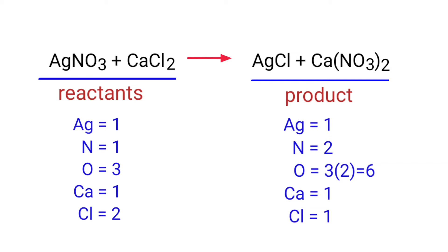In this equation we need to balance the nitrogen atoms first. To do this we need to put a coefficient of two in front of AgNO3. The nitrogen atoms are balanced.